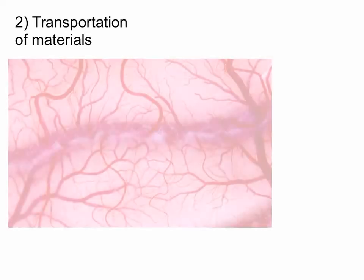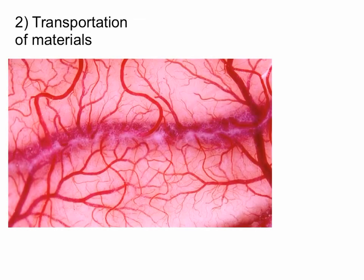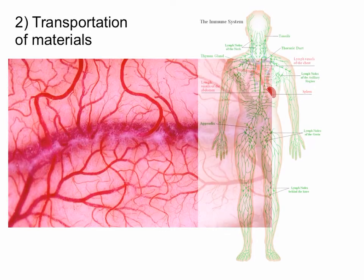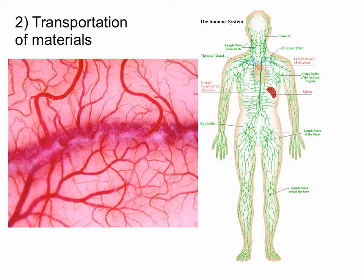Transportation of materials: the cardiovascular system is probably the most obvious one, where blood is responsible for transporting oxygen, carbon dioxide, nutrients, and waste products. But the lymphatic system is also a system for transportation of immune cells, as well as transportation of lymph, which is basically extracellular fluid. We'll talk more about that as we get into it.